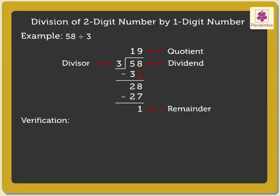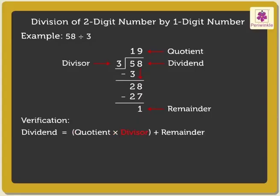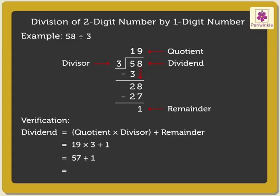We can also check our calculation. All we need to do is use the following relation: Dividend is equal to quotient into divisor plus remainder. That is, dividend is equal to 19 into 3 plus 1, which is equal to 57 plus 1, which is equal to 58. The answer we get is the dividend itself, that is 58.